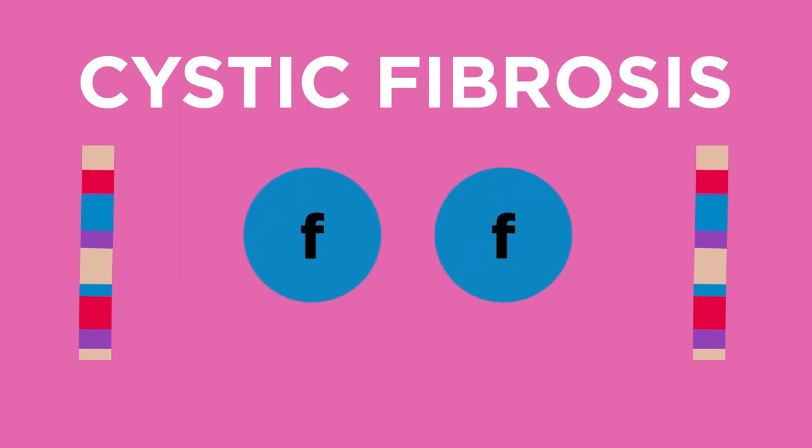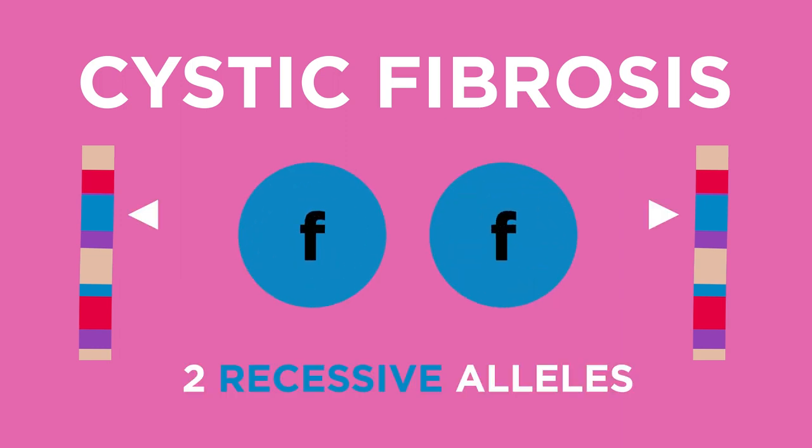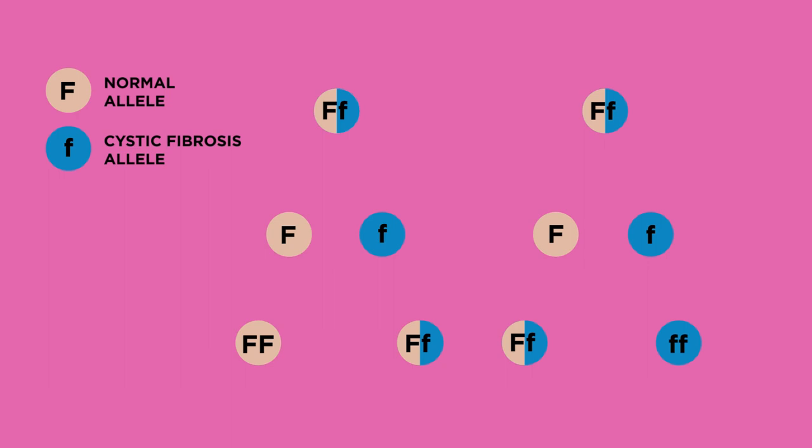Cystic fibrosis is inherited in a different way to polydactyly. Take a look at this genetic diagram and see if you can figure out how it is different.